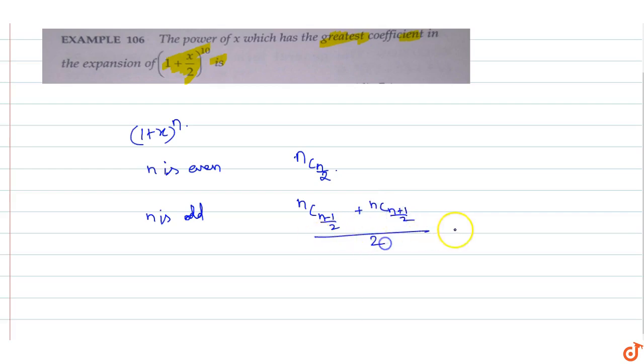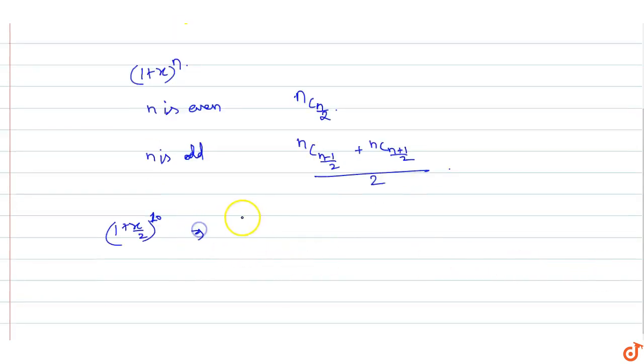So for our problem (1 + x/2) raised to power 10, n is 10, which is an even number, so the greatest coefficient is 10C5 which equals 10C5 times (x/2) raised to power 5.